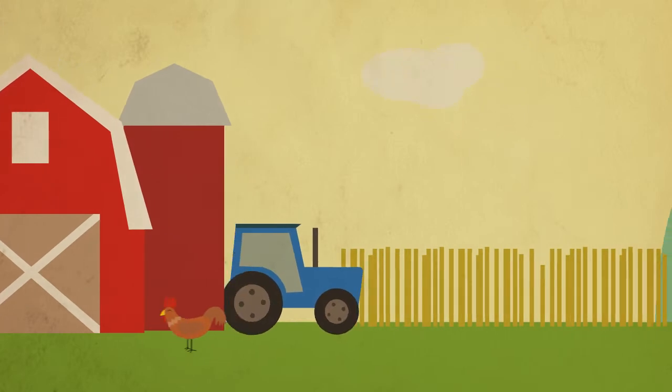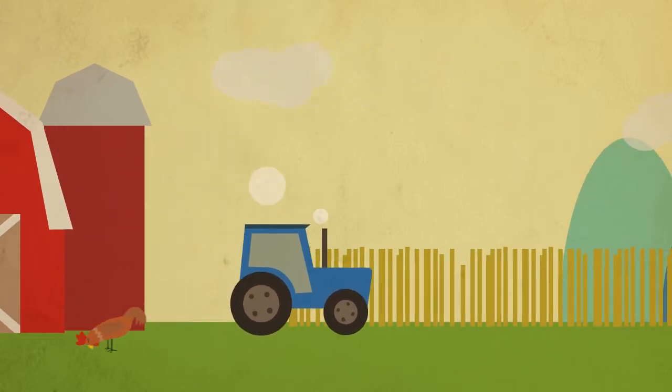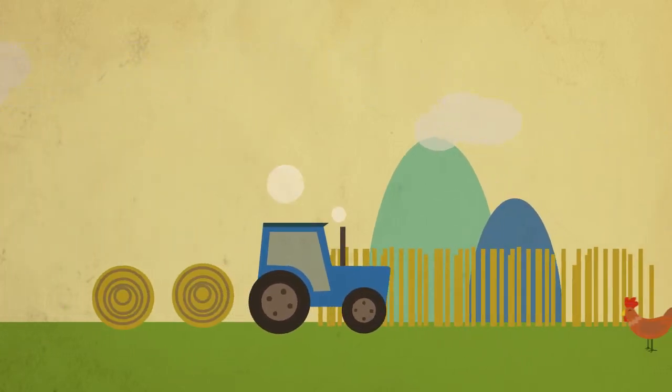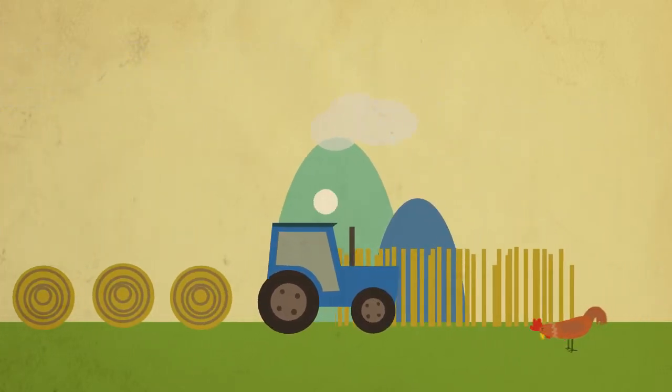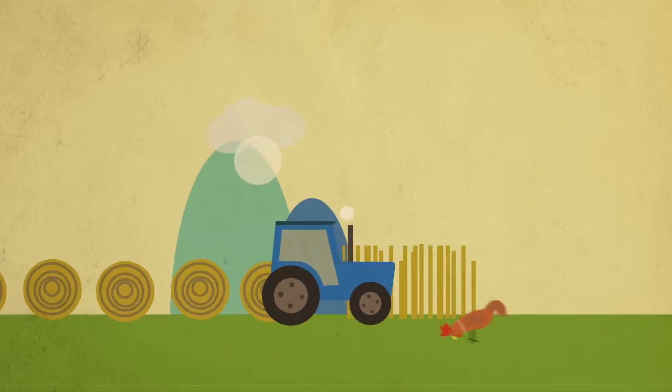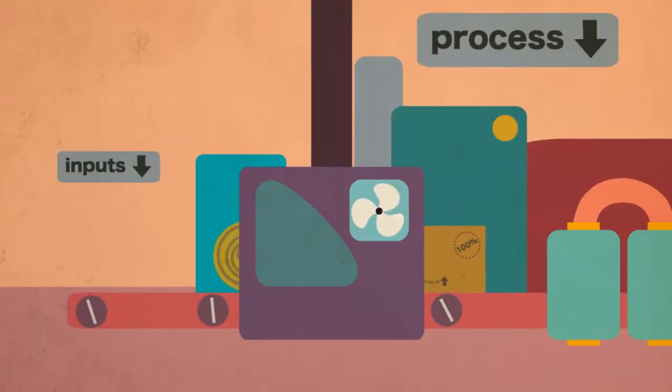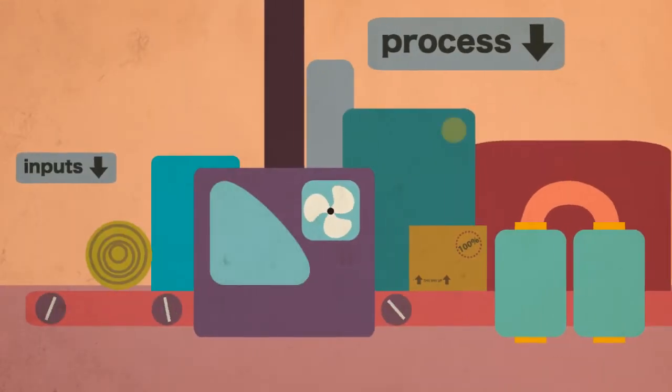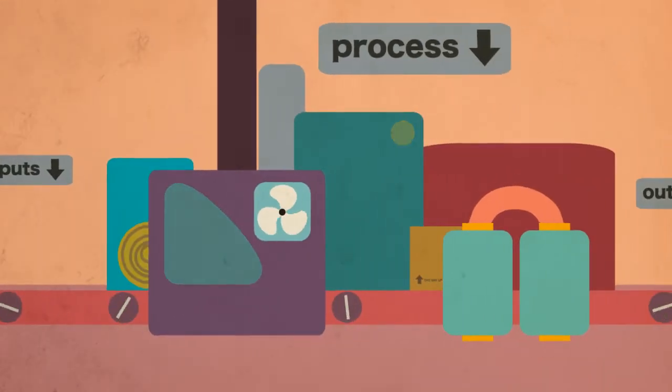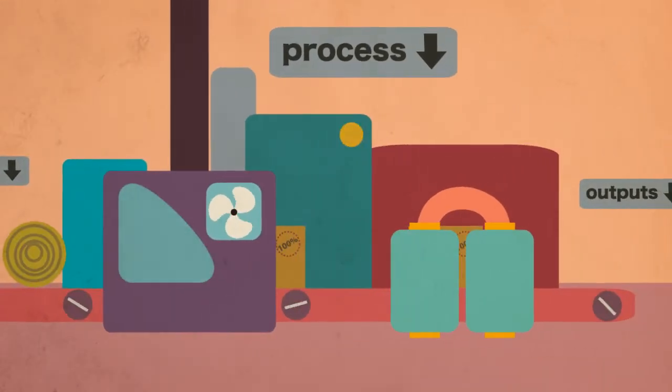Food comes from the land where farmers have grown and harvested plants and reared animals. We can look at food production as a system which has inputs, processes and outputs.